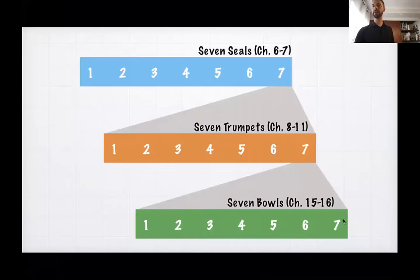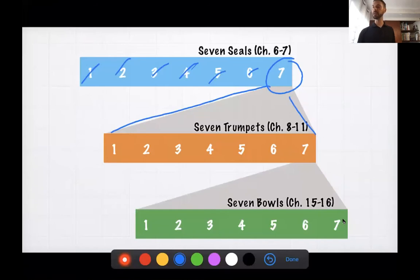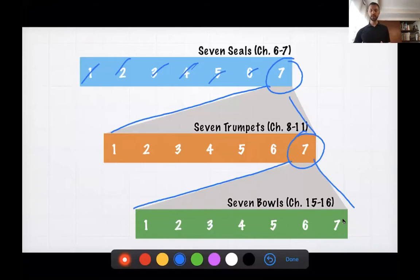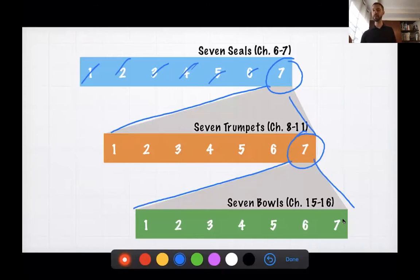What I mean is: you have seals one through six, and when you get to the seventh seal, it contains the next set — the seventh seal opens up into the seven trumpets. When you go through the seven trumpets, the seventh trumpet opens up into the seven bowls. These are like containers: you open the last judgment and inside you discover an entirely new set of judgments. You begin again with another seven, and at the end you get seven more. That's the framework.